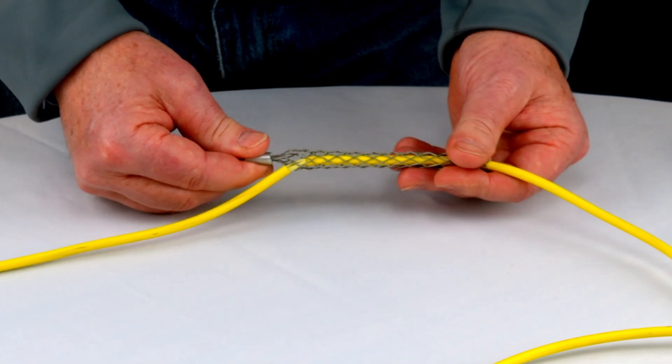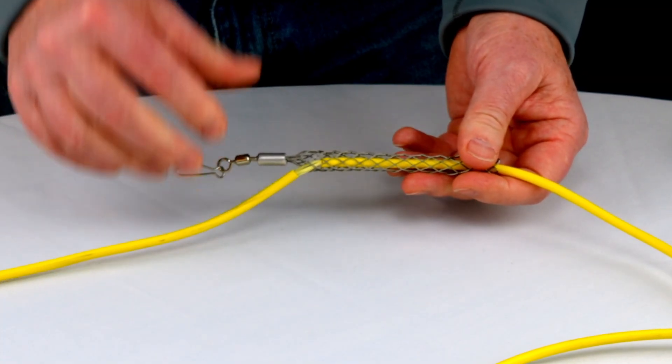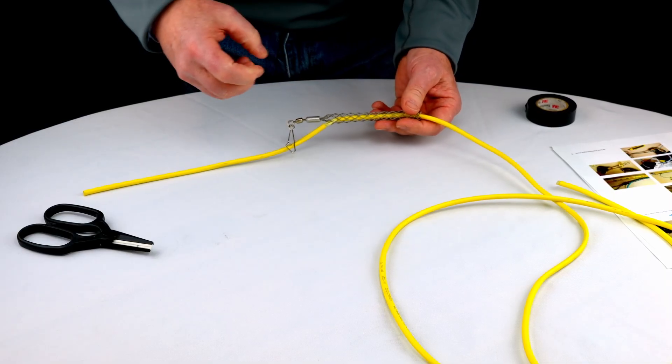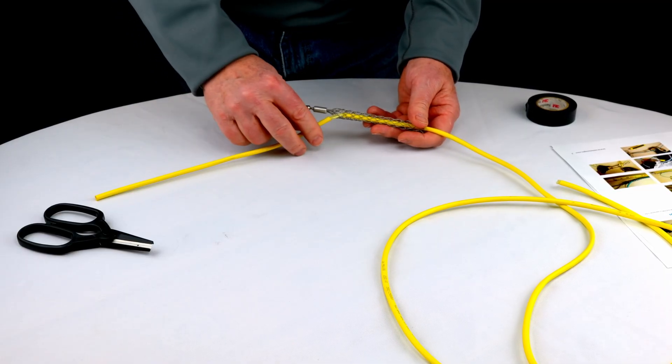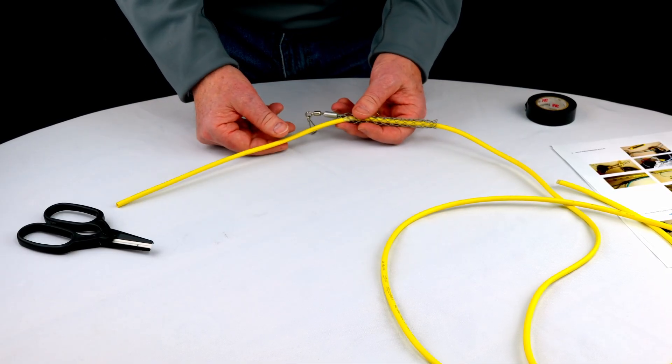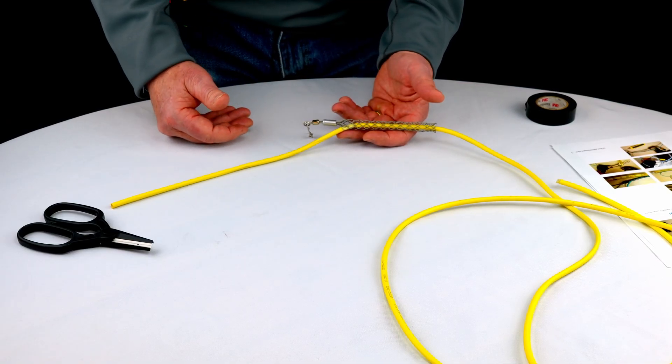As you pull it, it tightens. We're going to take that grip, but we're also going to add a connection to the aramid yarn that's in this fiber optic cable for the sake of protecting these strands.